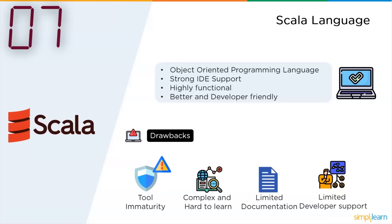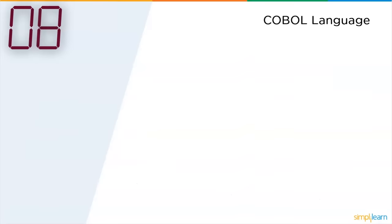The next fading away language is COBOL. COBOL is still in demand yet it is fading away. COBOL is a compiled, English-like computer programming language designed for business use. It is imperative, procedural, and since 2002, object-oriented.